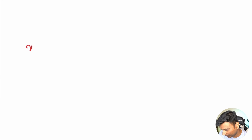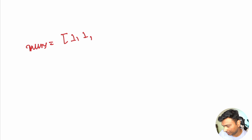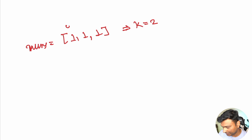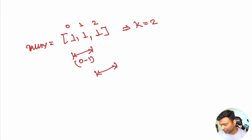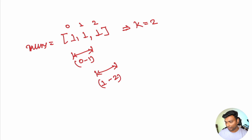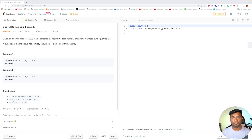The array is [1, 1, 1] with indices 0, 1, and 2, and k equals 2. There are two possible subarrays whose sum equals 2. The first is indices 0 to 1, giving 1+1=2, and the second is indices 1 to 2, also giving 1+1=2.